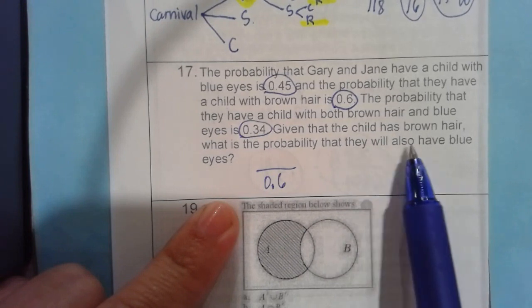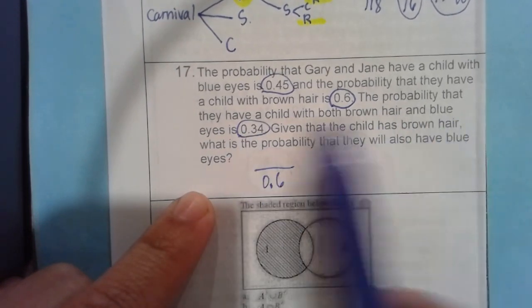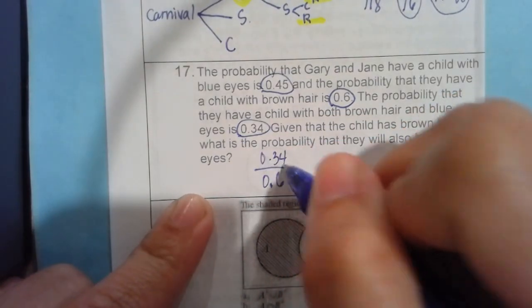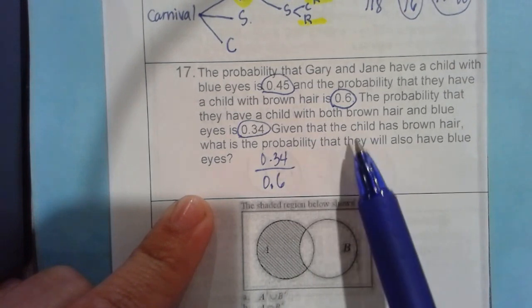Now, probability that they will also have blue eyes. Blue eyes. See, brown hair and blue eyes would be 0.34. So I think this problem is quite easy because it's already stated here.